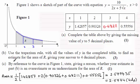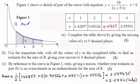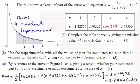For the last question, it says by reference to the curve in the diagram, give a reason whether your estimate in Part B is an overestimate or an underestimate. Clearly it's an overestimate because you can see the trapeziums have a little section above the curve. So for Part C, it's an overestimate because the trapeziums are greater than the area of R.